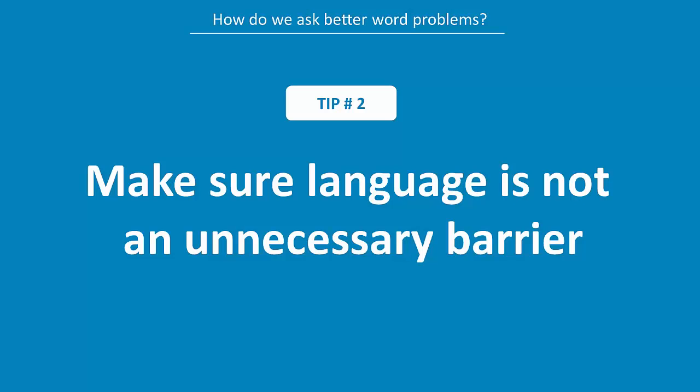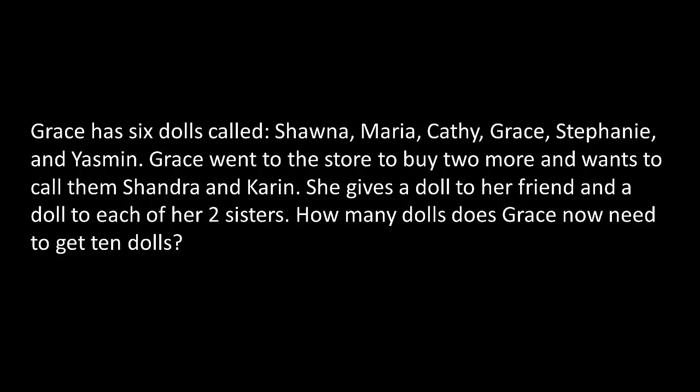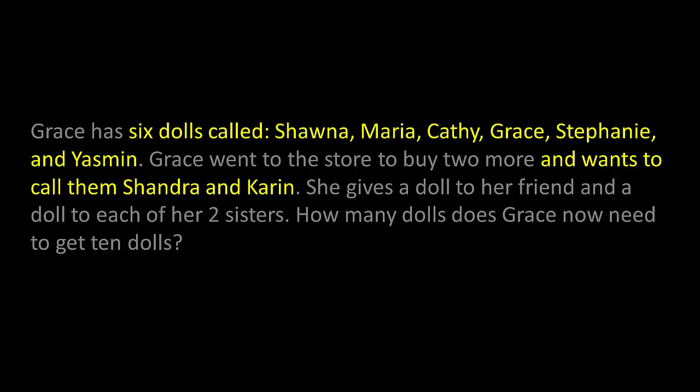Tip two: it's not about words. Words are just a tool we use because they're efficient, but we need to make sure we're using them as effectively as possible. Avoid making language an unnecessary barrier. Here's an example: Grace has six dolls called Shauna, Maria, and — I'm already losing track of what's happening. We're throwing so much fluff in here that isn't necessary. So let's just clean this up a bit.